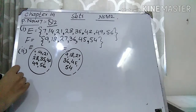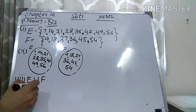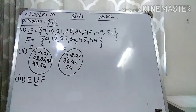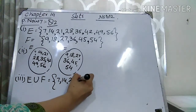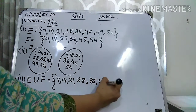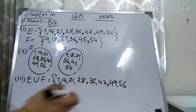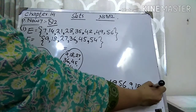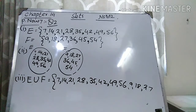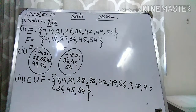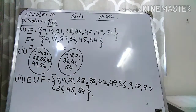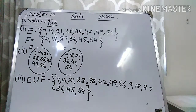In part 3, from the Venn diagram find E union F. Whenever the symbol union is used, write all the elements together in a combined way. So E union F = {7, 14, 21, 28, 35, 42, 49, 56, 9, 18, 27, 36, 45, 54}. You can follow the sequence or not — both are acceptable. I hope today's lecture is clear to you. Take very good care of yourself, thank you very much and Allah Hafiz.